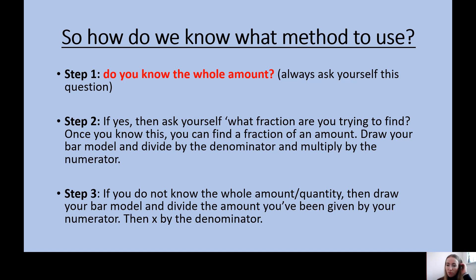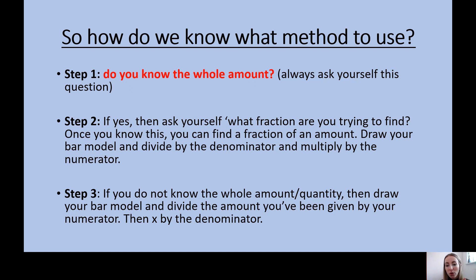There are three steps. First, ask yourself: do you know the whole amount? Read the question, underline the key pieces of information, and ask yourself that question. If you do, then you're finding a fraction of an amount — find out what fraction you're trying to find, because sometimes the fraction given in the question is not the one they want you to find. Draw your bar model, divide your whole amount by your denominator, and multiply the unit fraction value by your numerator. If you don't know the whole amount, go straight to step three: find the value of the whole quantity by dividing the given amount by your numerator, then multiplying that unit fraction value by the denominator.